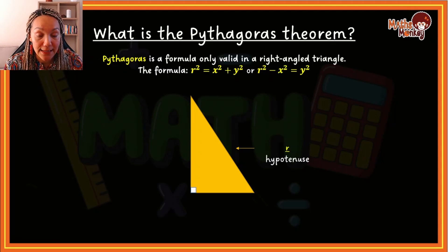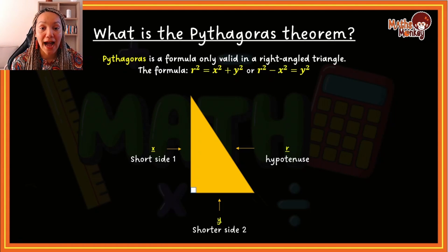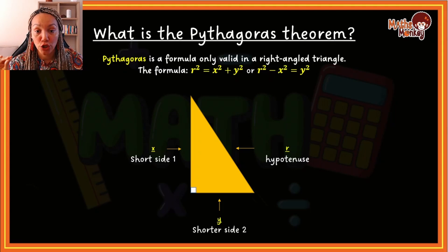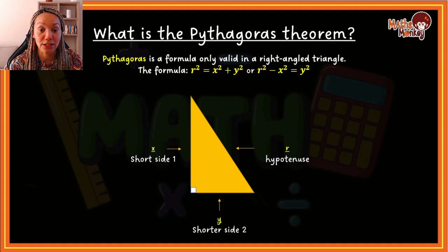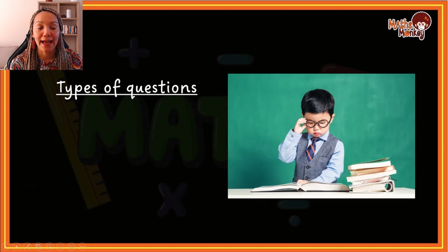The two lengths that make up the 90 degrees are considered our x and our y — they are the shorter sides. It does not matter if y is on top and x is at the bottom, as long as you remember that the two shorter sides are x and y and the longer side is r. Now that we understand the elements of a right angle triangle, let's look at the different types of questions they can ask you.